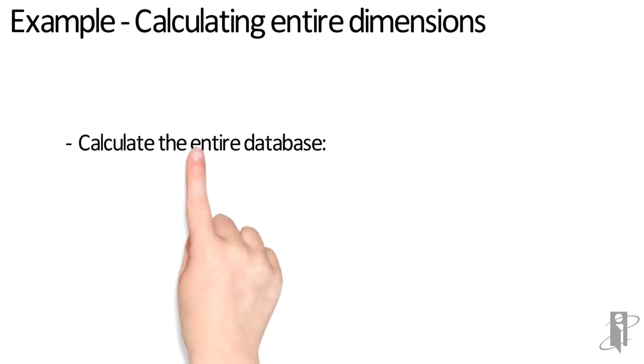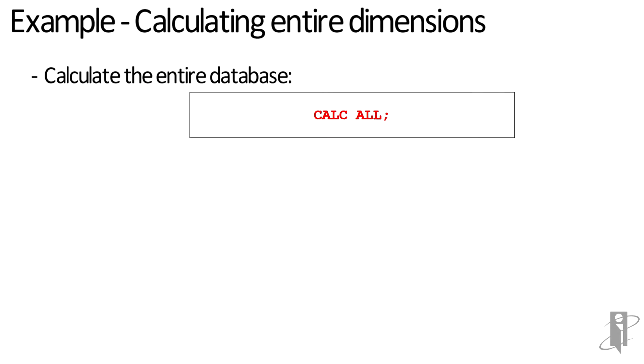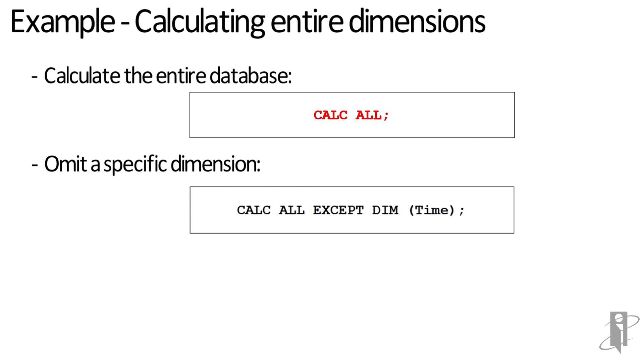CALC ALL will definitely calculate the entire database. But let's say we don't need to calculate time. Maybe time is a dense dimension and all the upper-level members are dynamic. I don't want it to waste time calculating it. I can say CALC ALL EXCEPT DIM time. Or maybe I have a stored sparse scenario dimension with members with formulas that are stored. I could say CALC ALL EXCEPT DIM scenario and it would ignore it.